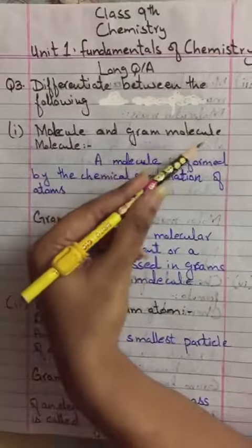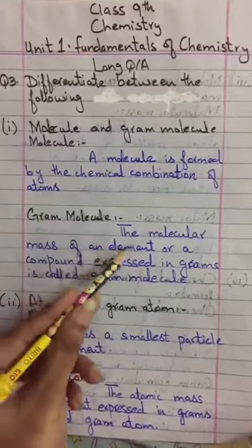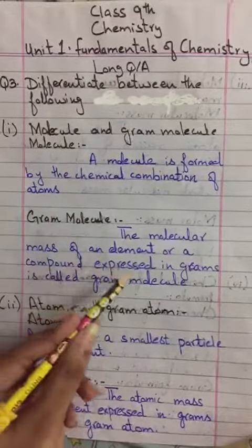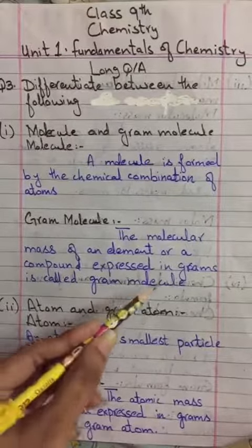Molecule and Gram Molecule. Molecule: a molecule is formed by the chemical combination of atoms. Gram Molecule: the molecular mass of an element or a compound expressed in grams is called Gram Molecule.